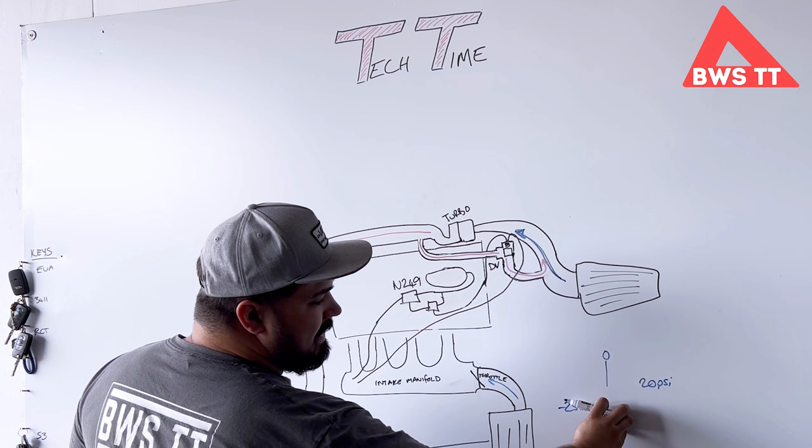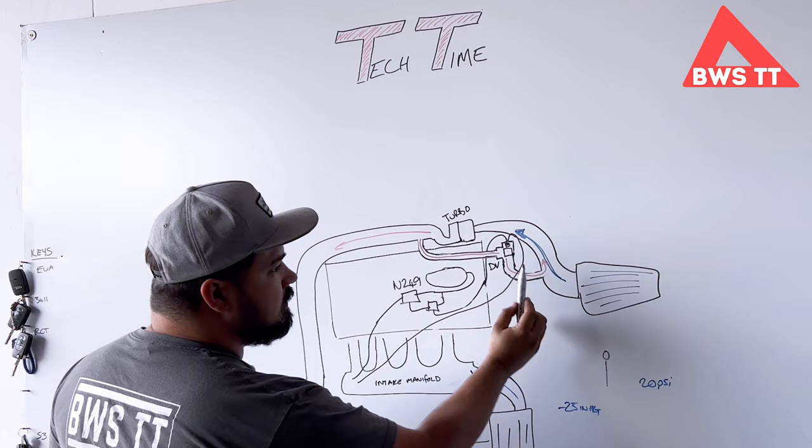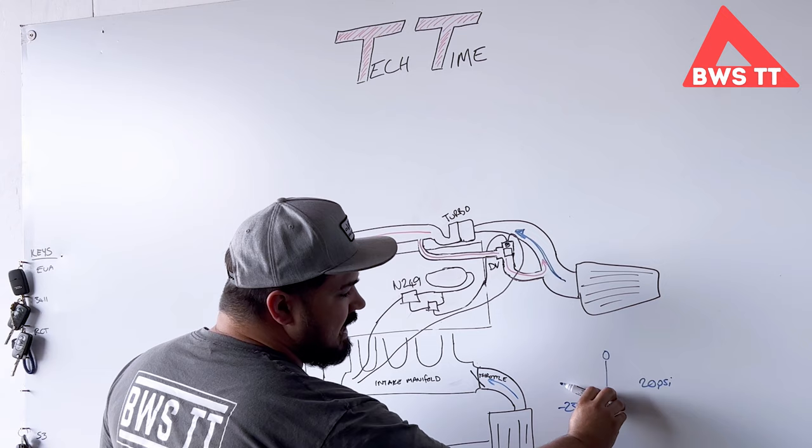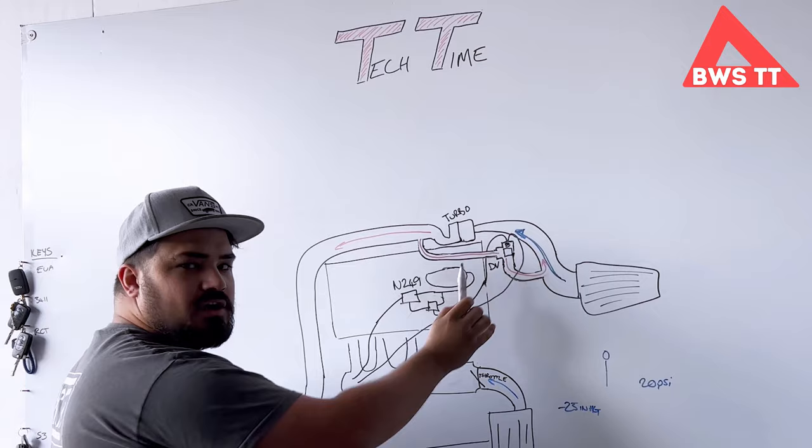So at idle, with this amount of vacuum, this valve will be open. And as we put our foot on the throttle to start moving, you'll notice if you've got a boost gauge that we hover around this area. Now if we're still in this area, even without the N249, this diverter valve will be partially open.